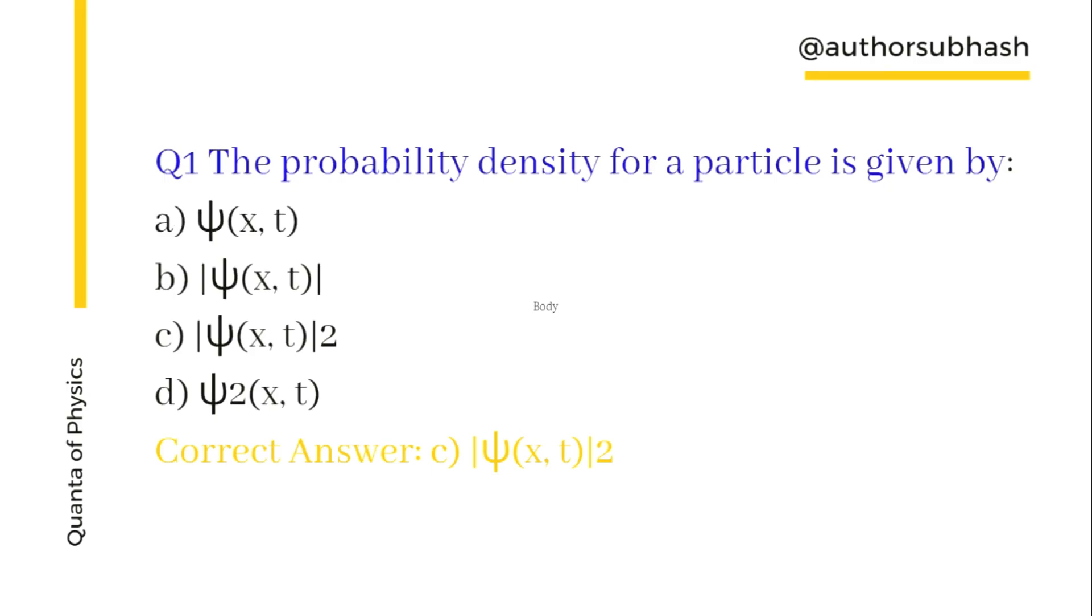Question number one: The probability density of a particle is given by the modulus of ψ(x,t) squared. ψ(x,t) is a wave function and its square represents the probability density of particles.